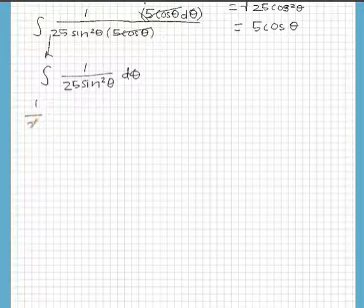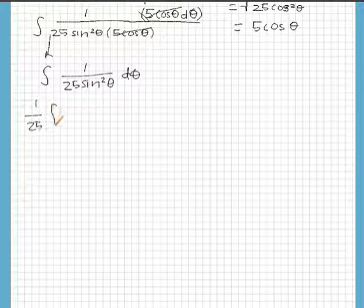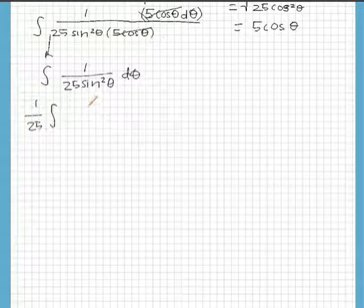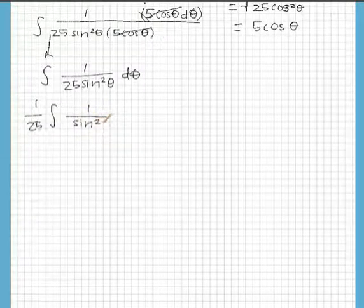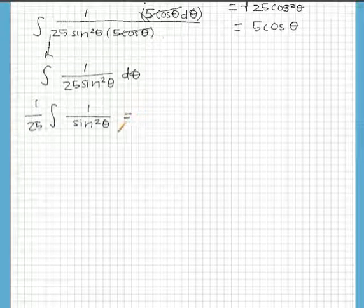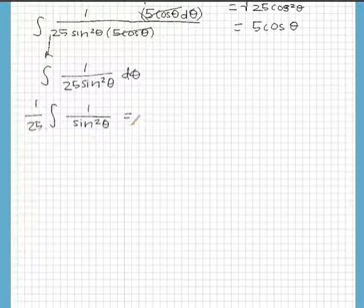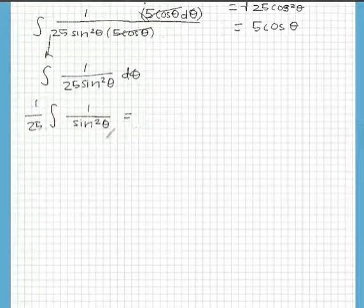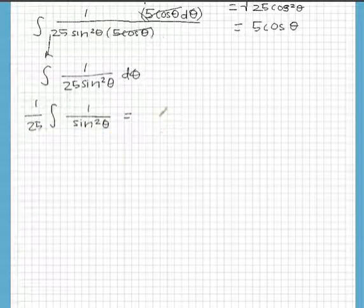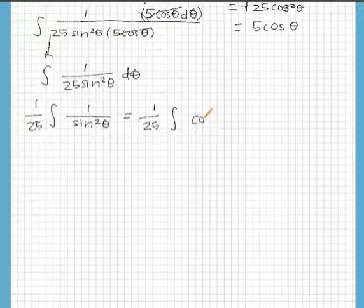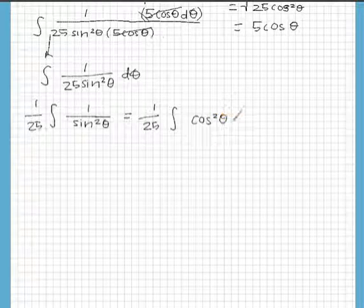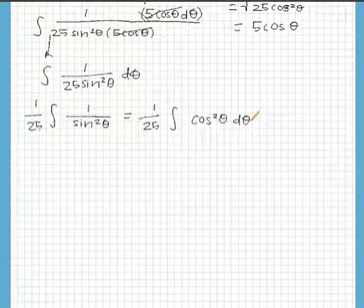So we have 1 over 25 integral of 1 over sine squared theta which by the trig identities we also know is equal to 1 over 25 the integral of cosecant squared theta d theta.